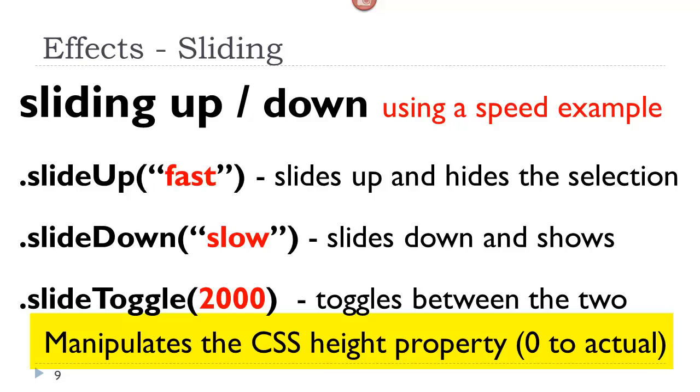We are actually manipulating the CSS height property. So essentially, whatever its default height is, we are taking it down to zero. And then we are toggling it back from zero, up into its default height. So height doesn't necessarily have to be specified. The browser knows how high something is. The only difference is that we can determine how fast this happens.